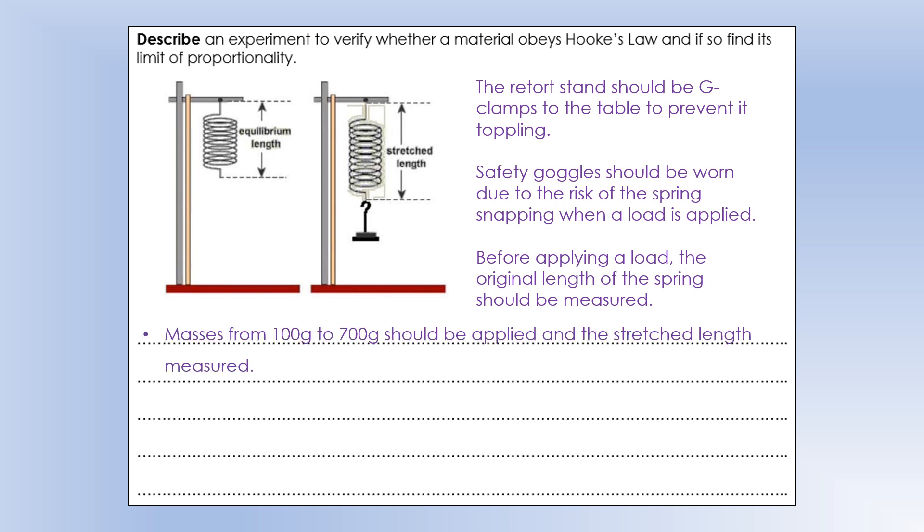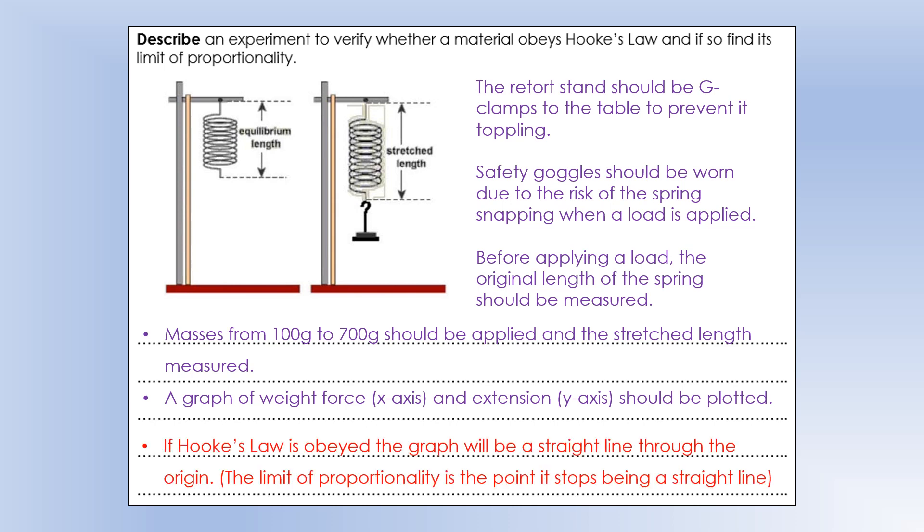The first thing you need to actually measure is the original length of the spring, labeled as equilibrium length. We need to do that before we apply any mass. Then we're going to use masses from 100 grams to 700 grams and measure the stretch length or extended length. We'll plot a graph with weight force on the x-axis, extension on the y-axis. Extension would be stretch length minus the equilibrium length. If Hooke's Law is obeyed, the graph is a straight line through the origin, and the limit of proportionality is the point it stops being a straight line.